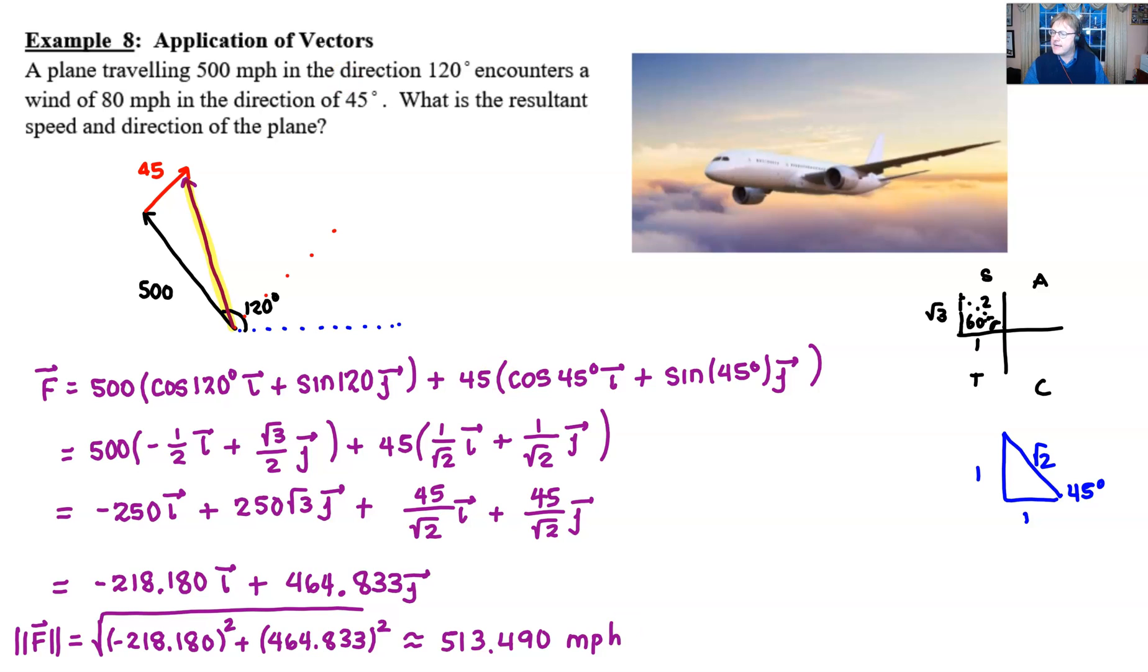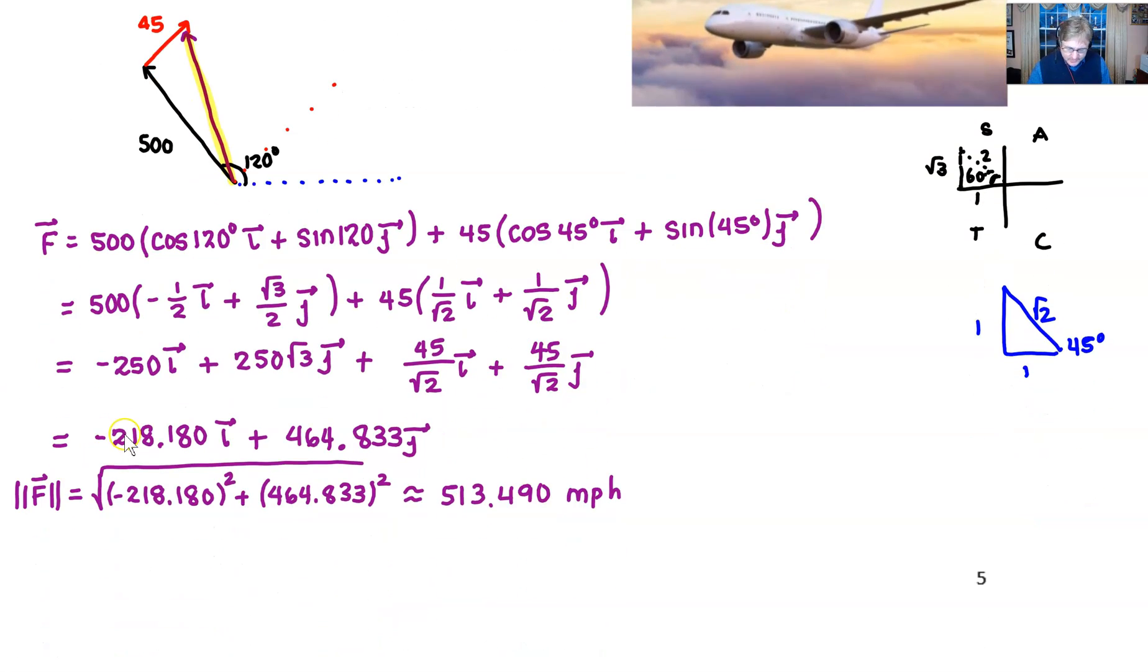Now we do need to figure out what our angle measure is going to be. For our angle, we know that theta is the inverse tangent of the y component divided by the x component. So you've got 464.833 divided by negative 218.180. If you were to enter this into your calculator, we're going to stay in radians for right now. We end up with approximately negative 1.132.